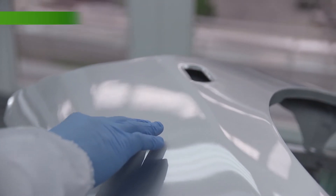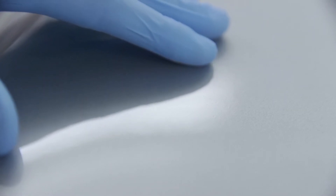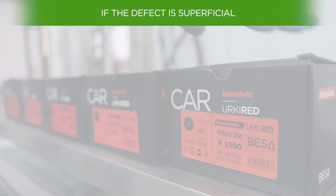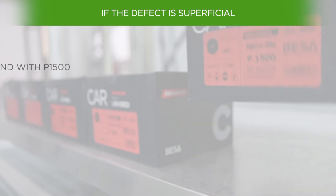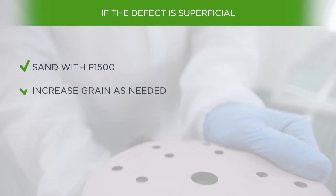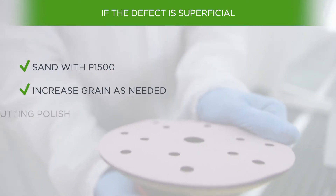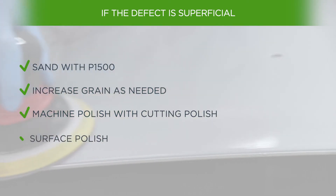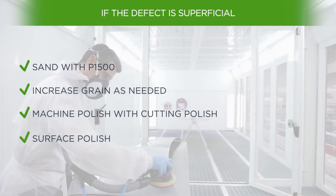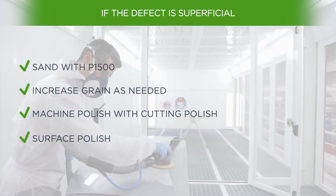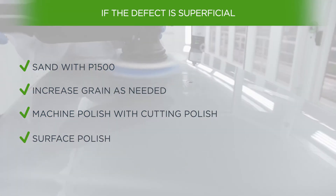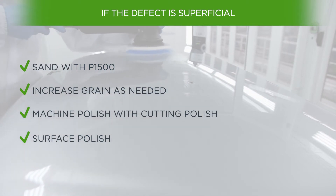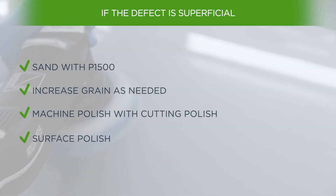As in many other cases, we must first identify the extent of the paint defect. If the defect is superficial, we'll start by sanding the affected area with a P1500 disc, increasing the grain as needed. Once we have managed to eliminate the surface boils, we will polish the piece with a cutting polish, and then apply another glazer.